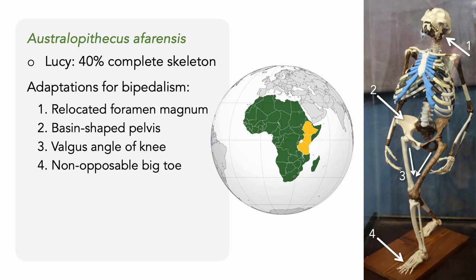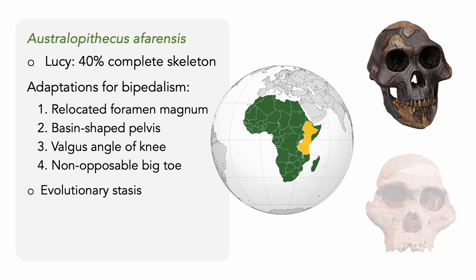As humans continue to evolve, we see more and more adaptations related to bipedalism, including more changes to the spine, forelimbs, and hands, which no longer need to be used for knuckle walking and can instead be used for finer applications. It turns out that Lucy's blend of ape-like and human-like traits is actually what made Australopithecus afarensis so successful. The environment was changing, so being adapted for life both on the ground and in the canopy allowed the species to survive for nearly one million years in a state of evolutionary stasis.